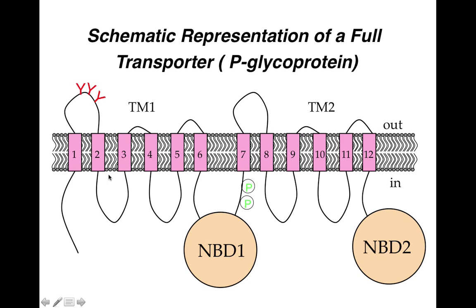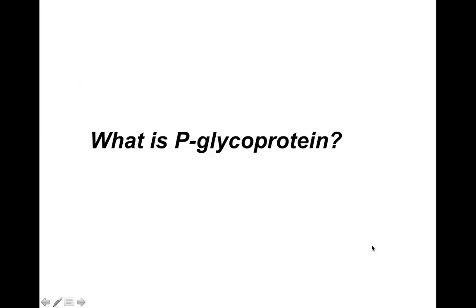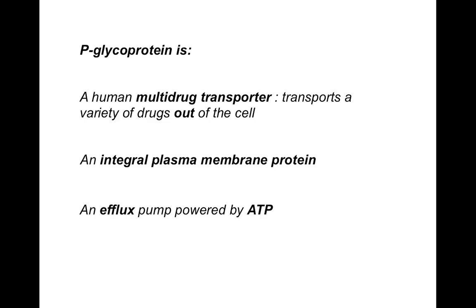In PGP, this transporter has 12 transmembrane alpha helices and two nucleotide binding domains. P-glycoprotein is a human multi-drug transporter — it can transport a variety of drugs out of the cell. This is active transport driven by ATP, and PGP can efflux drugs out of cells.